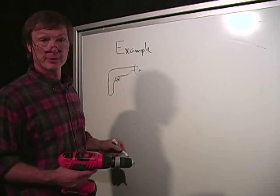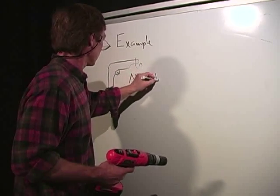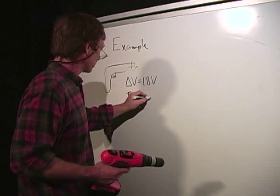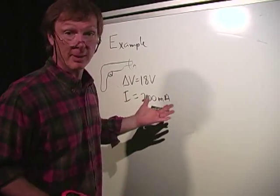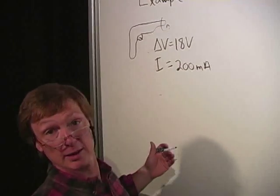There's my drill. The voltage in is 18 volts. And the current is 200 milliamps, which is 200 times 10 to the minus 3 amps. So I'm going to convert that to amps, because I'm going to want to get the input power.